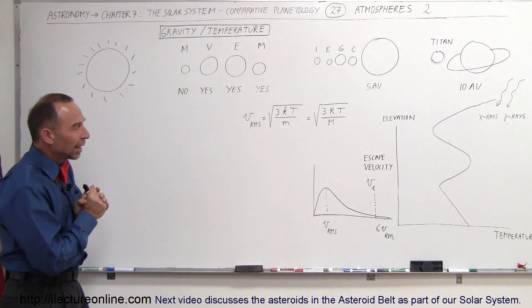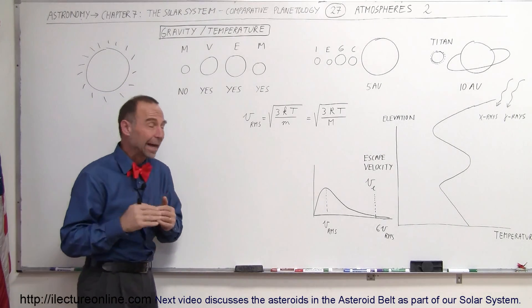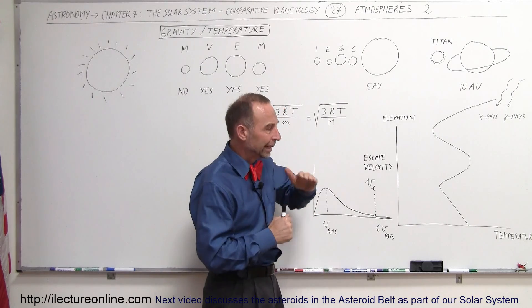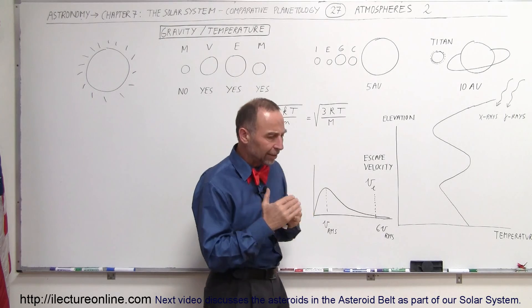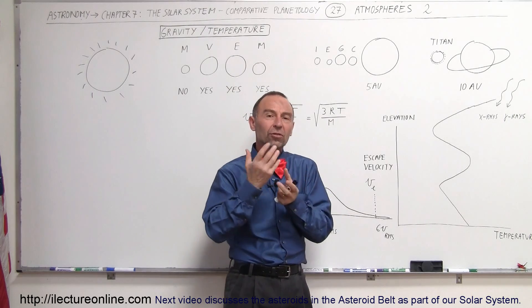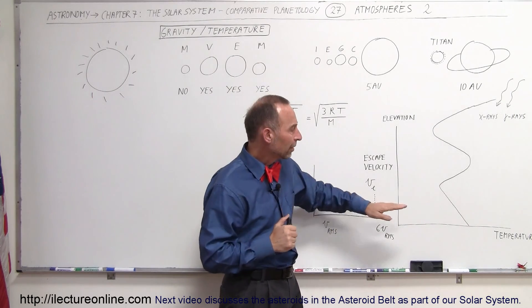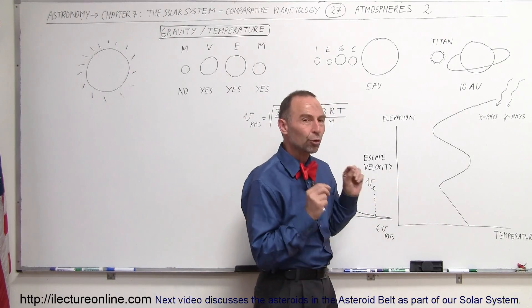So in our second video on atmospheres, we're going to take a look at the Earth's atmosphere, and we know that the Earth's atmosphere exists in several layers, about four of them. They're not all that different in constituency, but they are different in the temperature gradient.